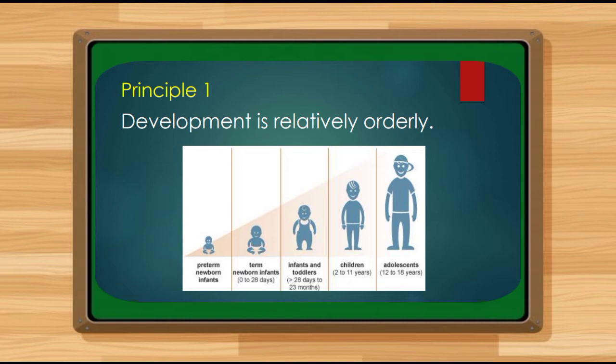When we say development is relatively orderly, in our example with Kian and Brian, they will learn to sit, crawl, and then walk before they can run. The developments of a child are sequenced — as children, we must first sit, crawl, then walk before we can run. It is not possible to run before being able to sit, crawl, and walk.